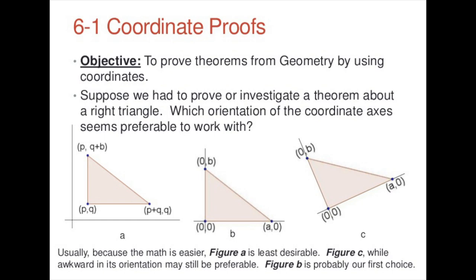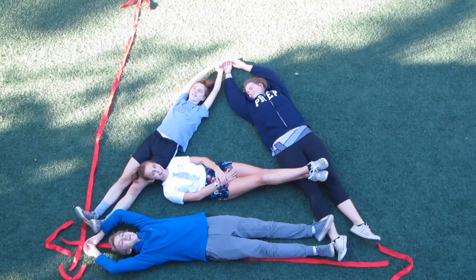Coordinate proofs are the hardest topic in this chapter because there are lots of things to remember. The first step is to locate the figure on a coordinate. It's easy if you can use the origin as a vertex, place one side on an axis, keep the figure in quadrant 1, and use coordinates that make simple computations. Let's do a practice coordinate proof to show that a line segment joining the midpoints of two sides of a triangle is parallel to the third side.